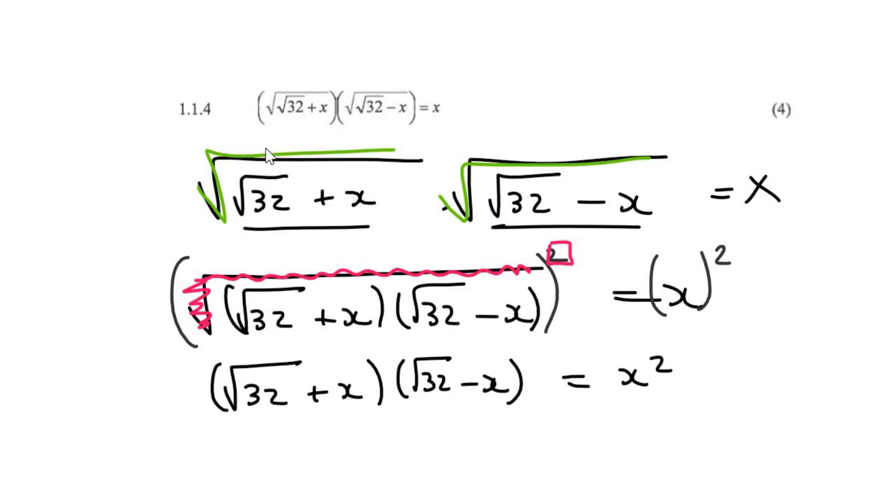Now, you didn't have to do it like that. You could have first multiplied the two brackets out and then squared. It doesn't really matter in maths as long as you don't break any of the main rules.